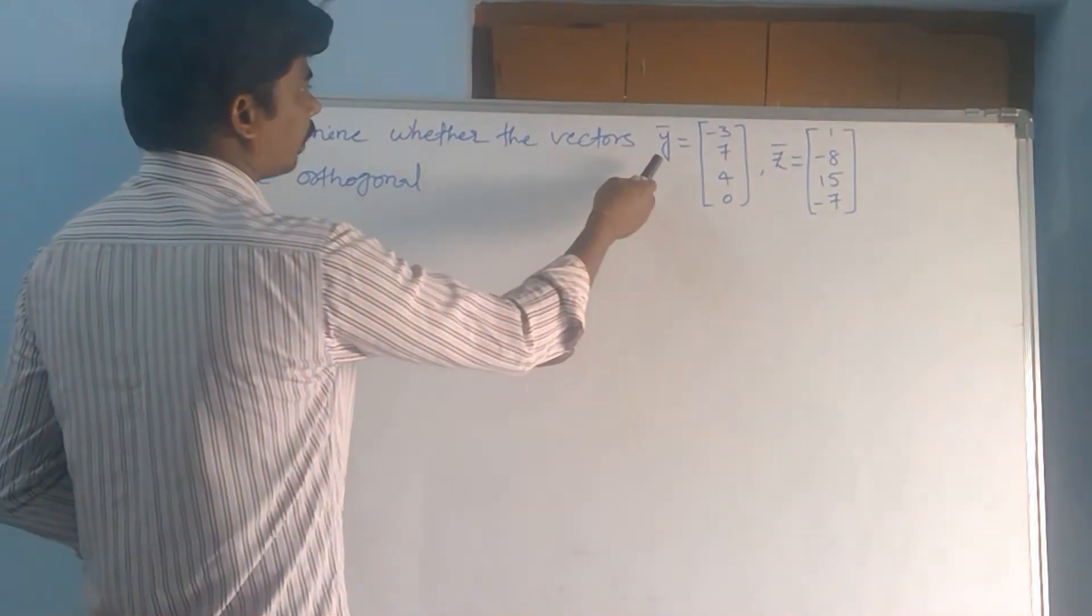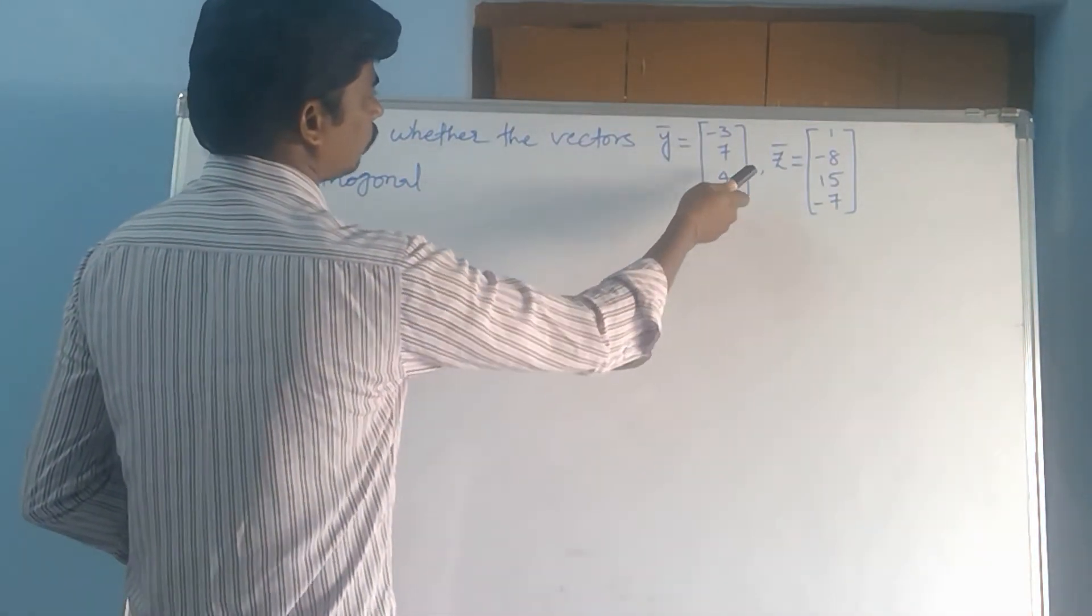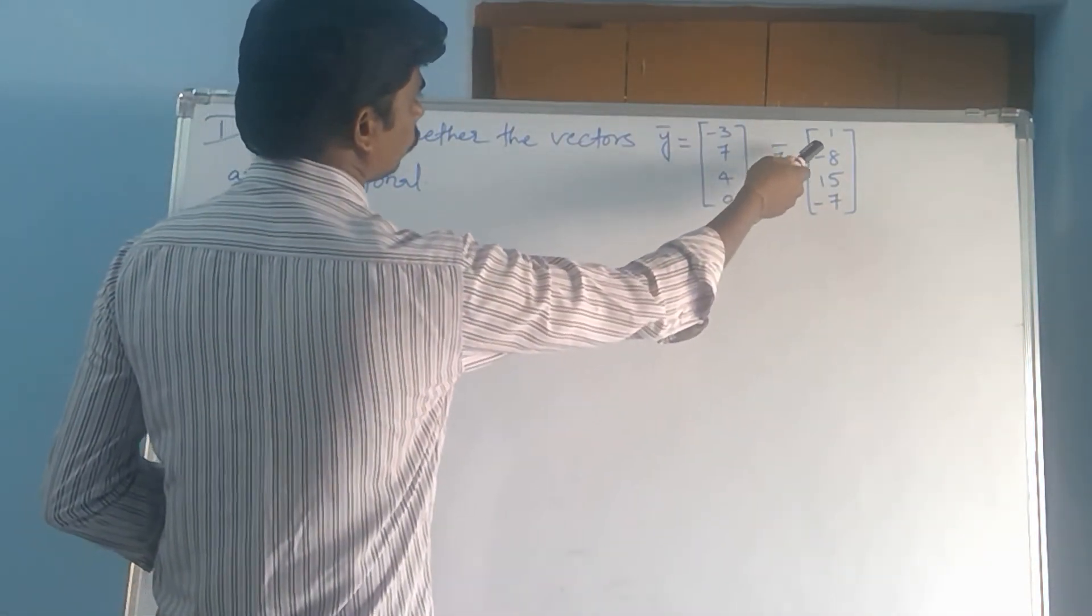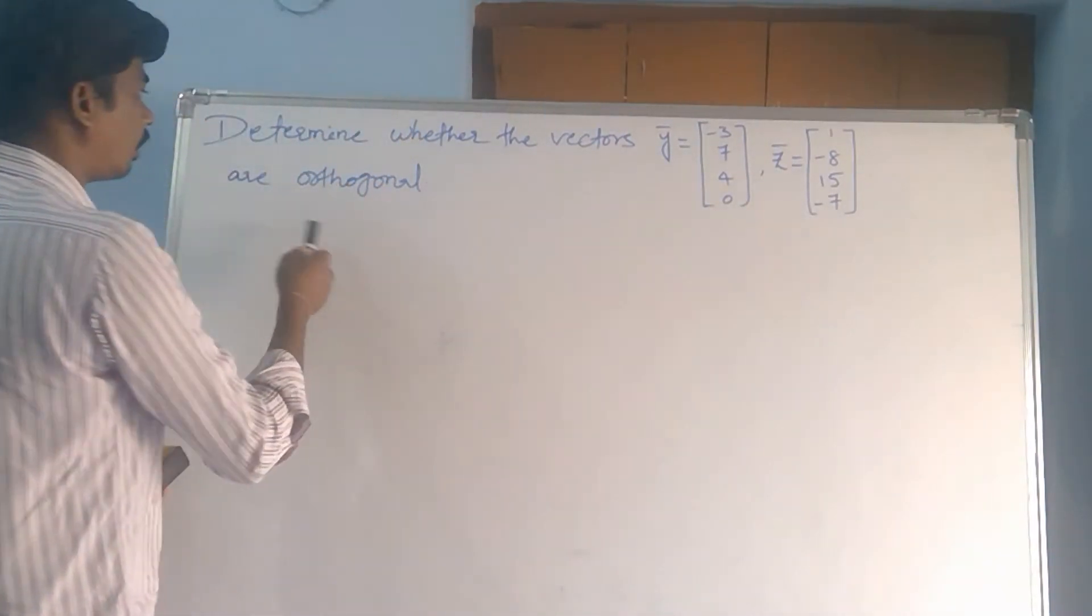Determine whether the vectors y bar equal to minus 3, 7, 4, 0, and z bar equal to 1, minus 8, 15, minus 7 are orthogonal.